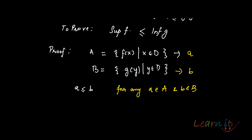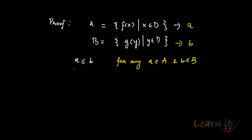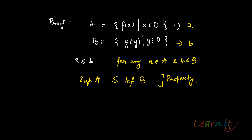So now, in case this scenario happens — where this is one set and this is another set, and each and every element of this set is less than or equal to each and every element of that set — then the supremum of A will always be less than or equal to the infimum of B. This comes from the property we have done previously — property number 2.